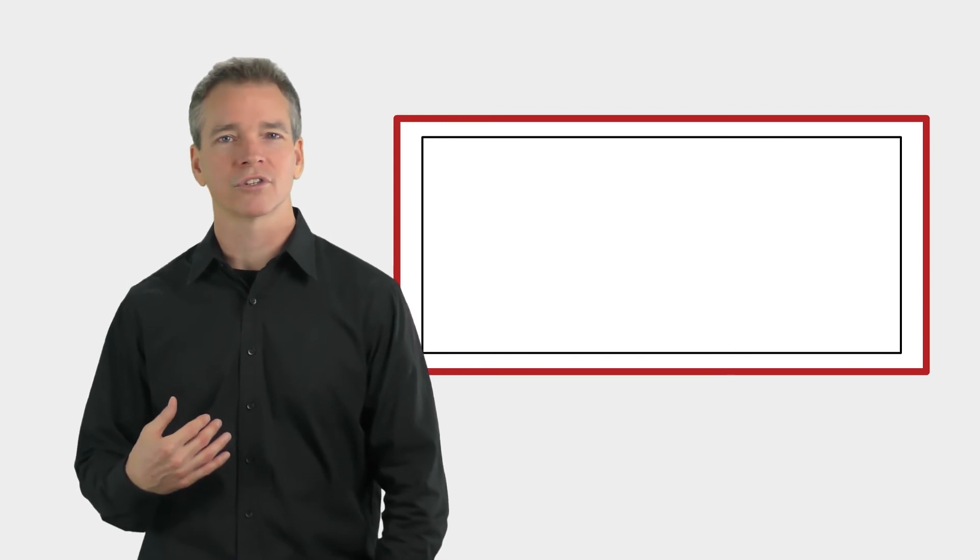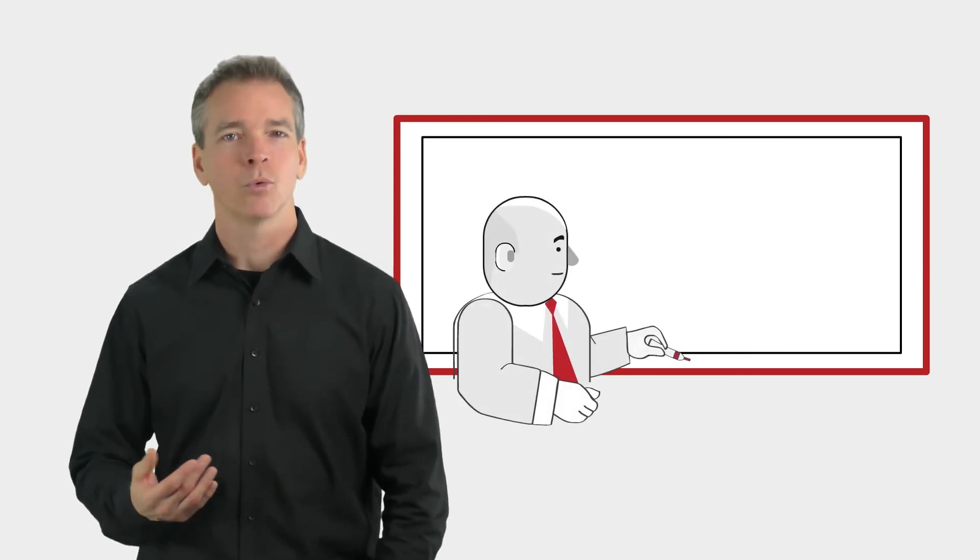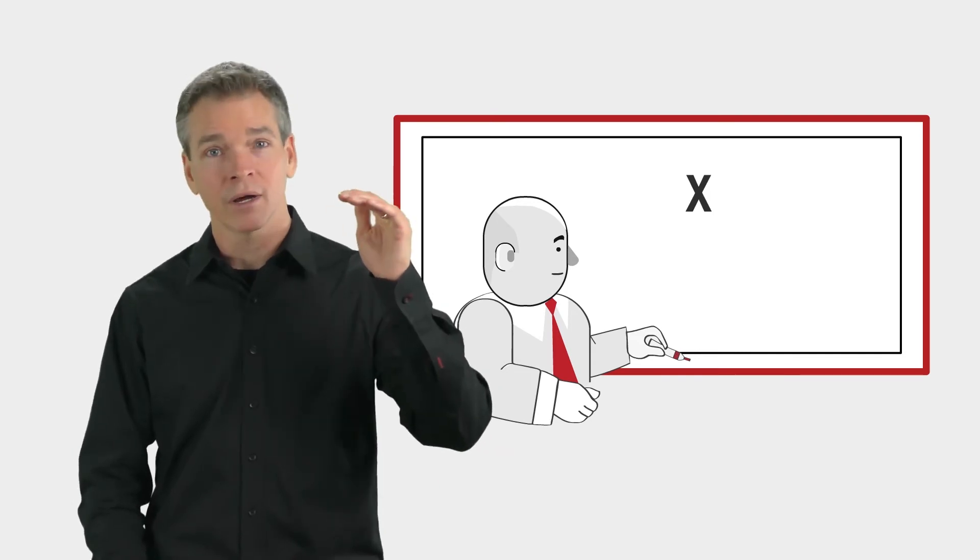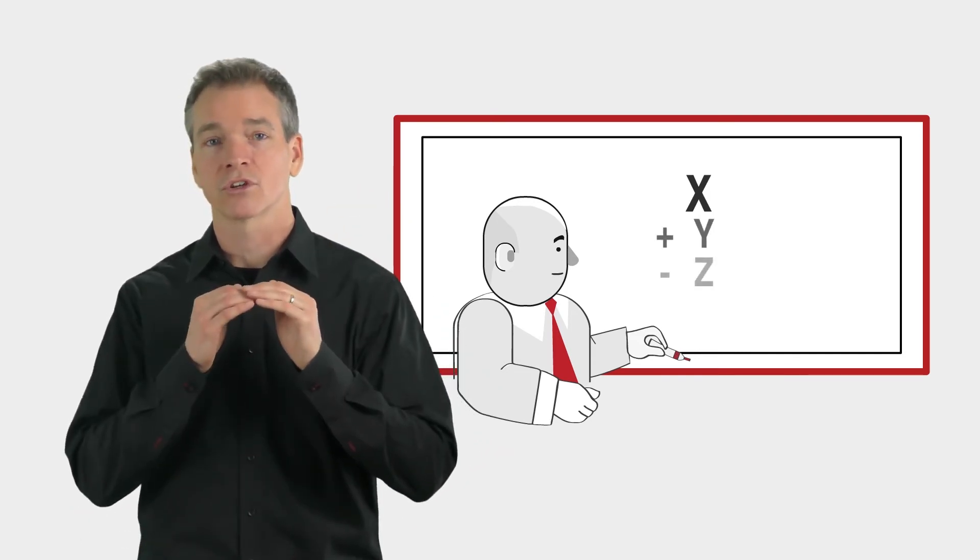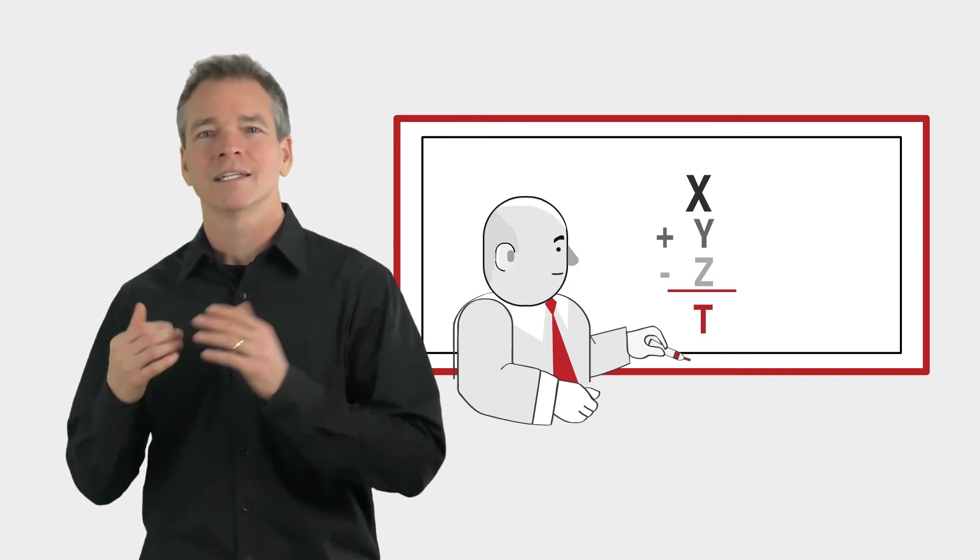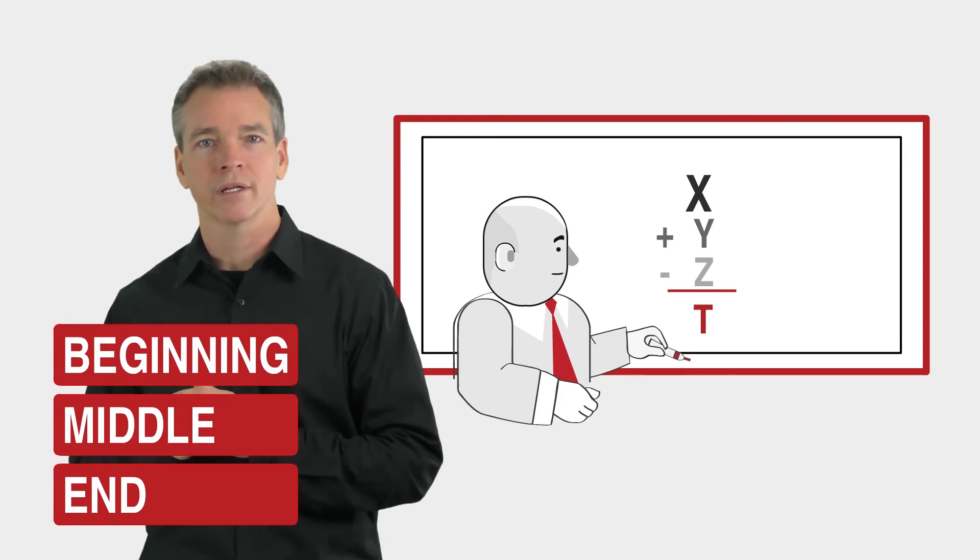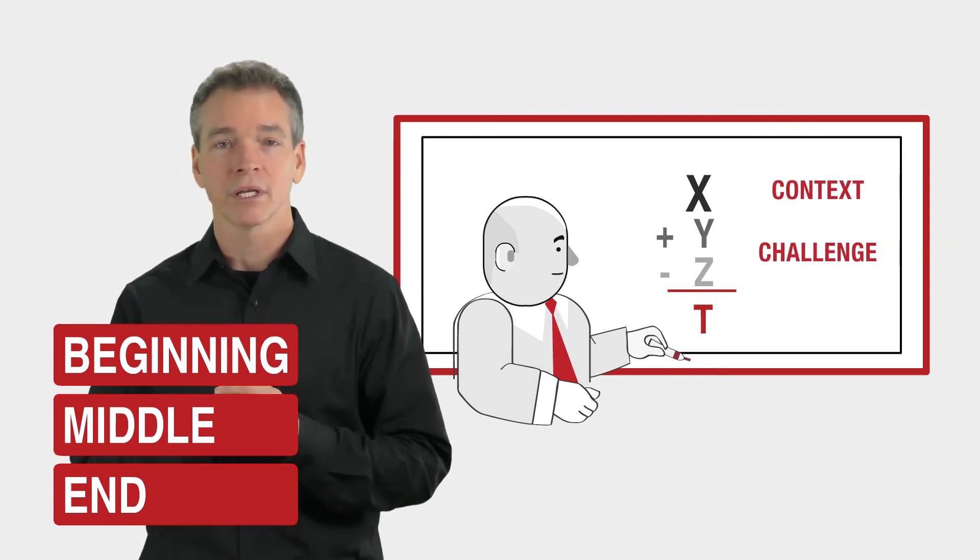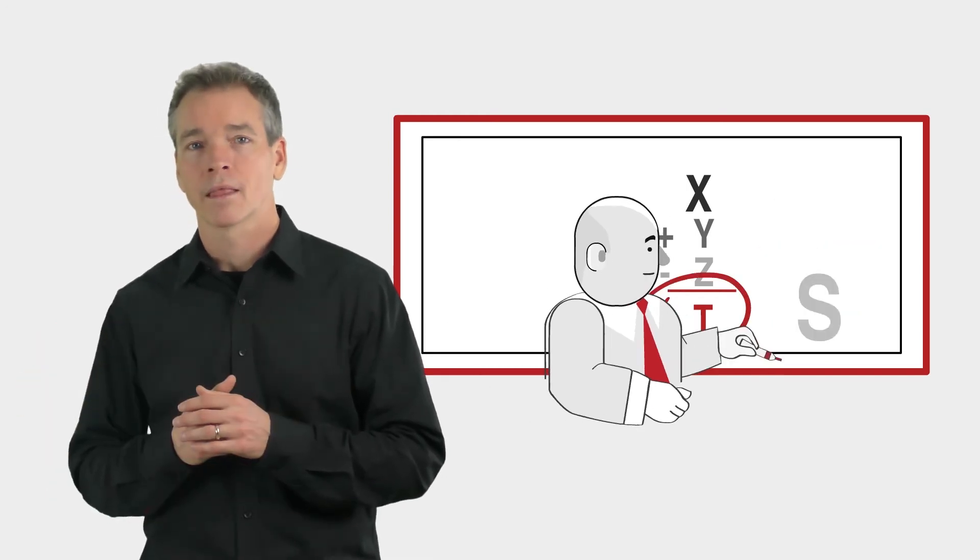First, notice how instead of just giving them the answer, he walked the audience through each number, from the bank account balance at the beginning of the month, to the revenues and expenses during the month, to the bank account balance at the end of the month. Now, didn't that feel like the beginning, middle, and end of a story, with the context at the beginning, some challenge and conflict in the middle, and a result at the end?